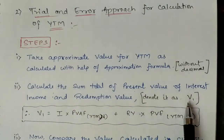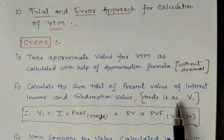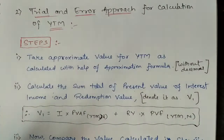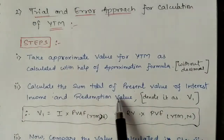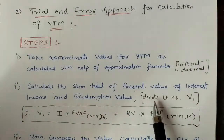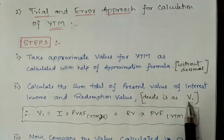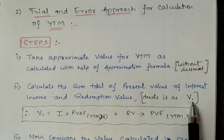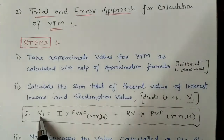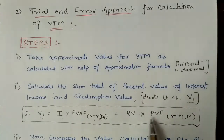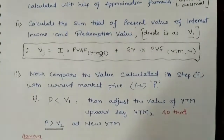The formula for V1 is based on the bond price formula: V1 = Interest × PVAF(YTM, N) + RV × PVF(YTM, N). Since the actual YTM is not known, we use the approximate YTM here. This gives us V1, the estimated present value of the bond's cash inflows at the approximate YTM for N years till maturity.